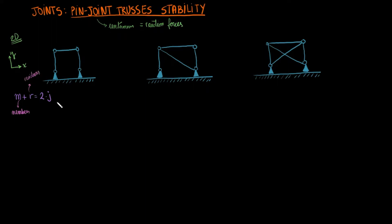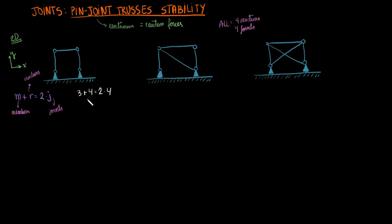Notice that the systems are attached at the bottom, so all three of them have four reactions. All three of them will also have four joints. However, the first system only has three members, which creates an inequality in the equation where we end up with 7, which is less than 8. As a result, we have an under-constrained system. Without enough reaction forces to keep the system stable, we will call the system unstable.